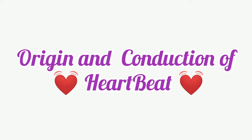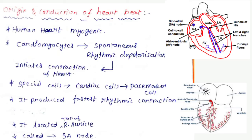The origin and conduction of heartbeat: the human heart is myogenic, meaning it is made up of muscles. The cardiomyocytes also occur in the human heart, and it also produces spontaneous rhythmic depolarization, which is essential for the conduction of the heartbeat.